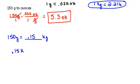0.15 kilograms over 1 times... We don't want kilograms, so we're going to put that on bottom. We can move between kilograms and pounds because 1 kilogram is equivalent to 2.2 pounds, and that will cancel out our kilograms.